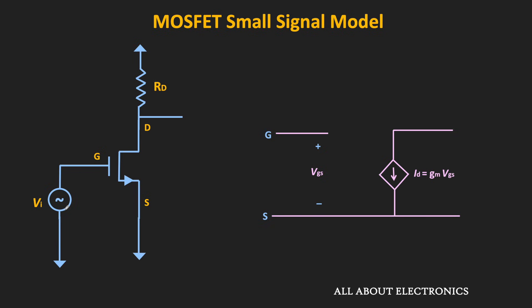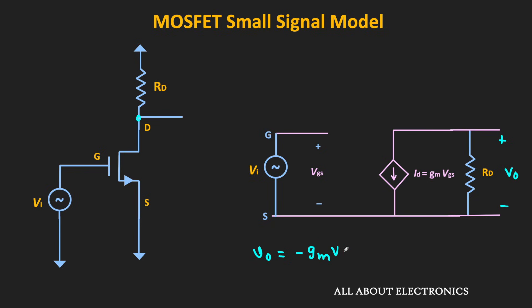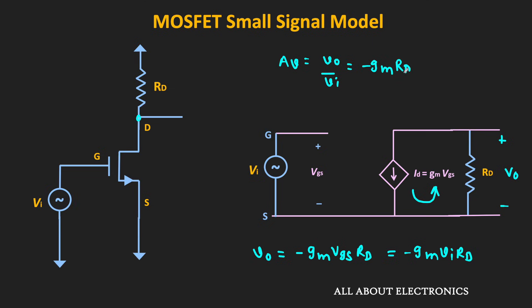In this small signal model, the input signal Vin appears between the gate and the source terminal. The drain resistor RD appears between the drain terminal and the ground terminal. Since the source terminal is also grounded, this resistor RD appears between the drain and the source terminal. If the output is measured between the drain and the source terminal, then Vout equals −gm × Vgs × RD, or equivalently −gm × Vin × RD, because the current is flowing in the clockwise direction. So the voltage gain, Vout/Vin, equals −gm × RD.